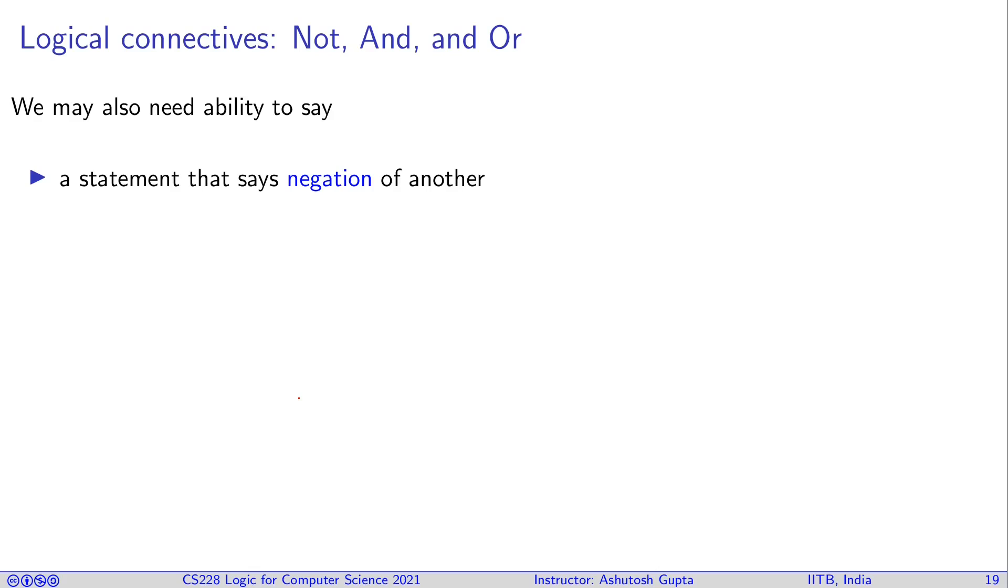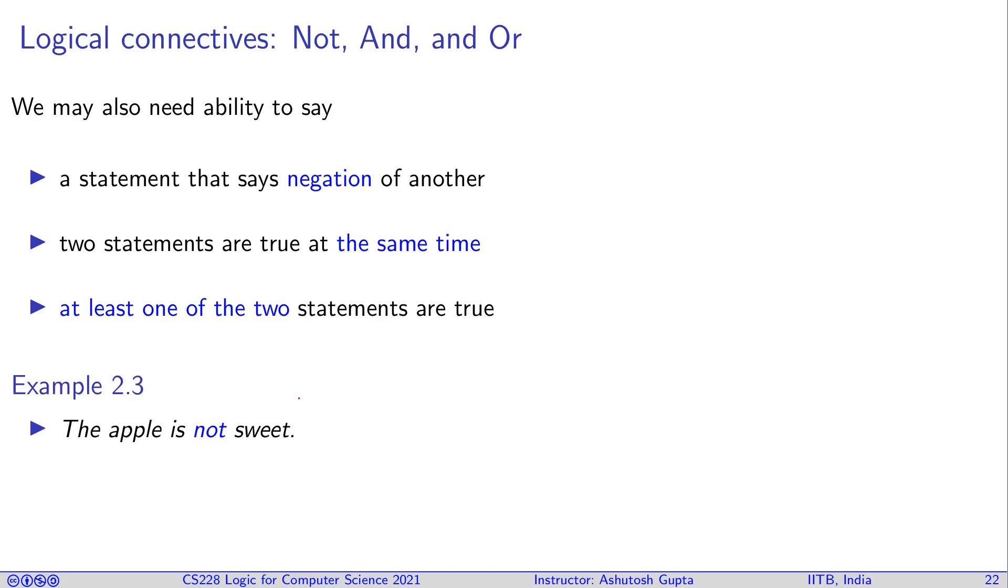Let's see how we can connect our propositions. One simple thing we can do is, if I give you a proposition, you say this is not true, so you can negate the proposition. You can say that two propositions are true at the same time, or you can say that at least one of the two propositions are true. For example, you can say that apple is not sweet, so it is negating the statement that apple is sweet. Or you can say that apple is sweet and Delhi is far, so we are taking two propositions and putting them as a conjunction. Or you can say apple is sweet or Delhi is far. So these are ways we may want to connect our propositions.